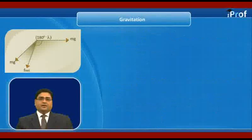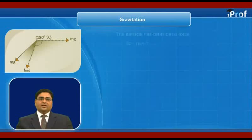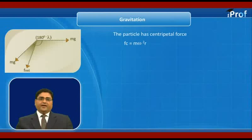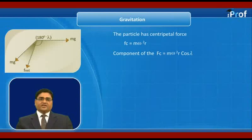When earth rotates, particles on the earth also rotate. Let m be the mass of the particle rotating in a circle of radius small r. The centripetal force experienced by the rotating particle at latitude lambda is m omega² r. The component of centripetal force along the direction towards the center of earth is m omega² r cos lambda. Since small r equals capital R cos lambda.